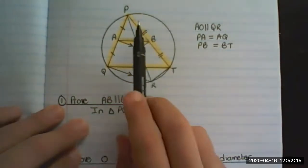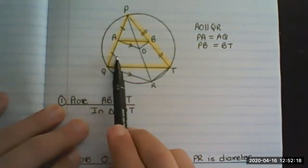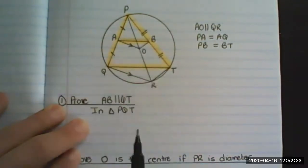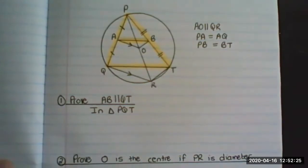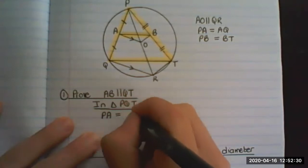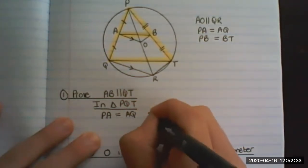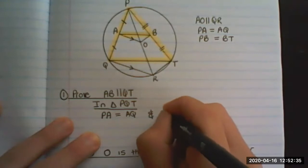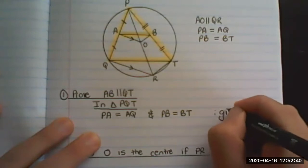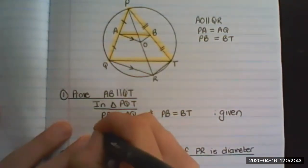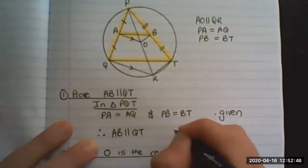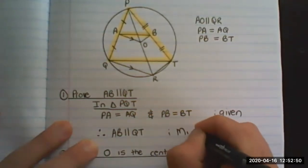Now that it's part of this triangle, I can see that these pairs of lines are equal to each other. Therefore, this line is parallel to that one. So we say PA is equals to AQ and PB is equals to BT. That information is given. Therefore, AB is parallel to QT and the reason is midpoint theorem.